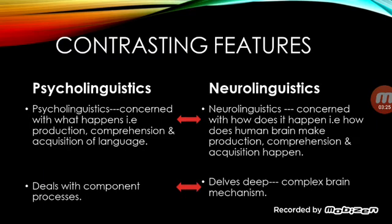Psycholinguistics is concerned with what happens — that is, the production, comprehension, and acquisition of language — while neurolinguistics is concerned with how it happens, that is, how the human brain makes production, comprehension, and acquisition of language happen. Psycholinguistics deals with production and comprehension of language along with their component processes and how we acquire these skills.